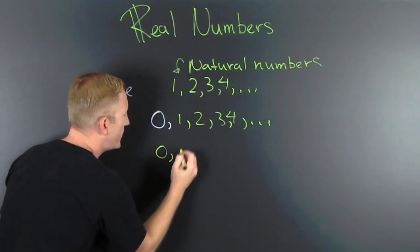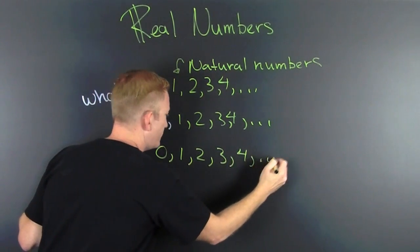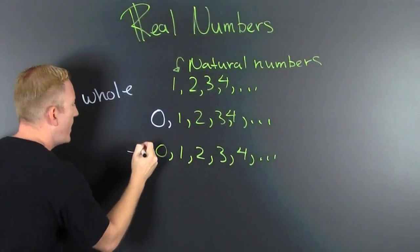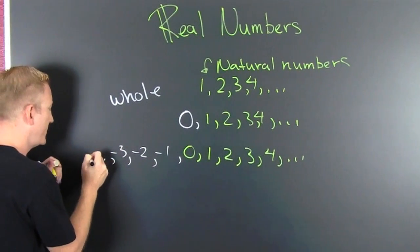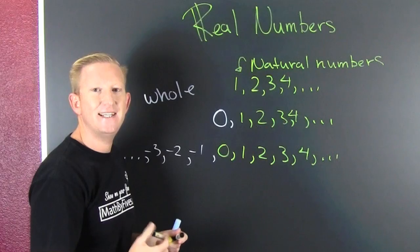So we go and we take those and we augment it with the negative numbers, the negative counting numbers. So I take those whole numbers and I augment it with the negative numbers: minus one, and minus two, and minus three, and then they keep on going that way. And those are the integers.